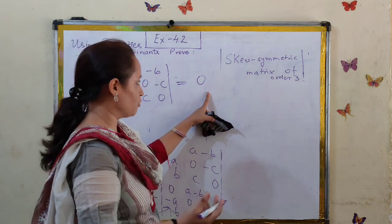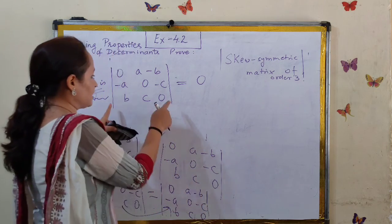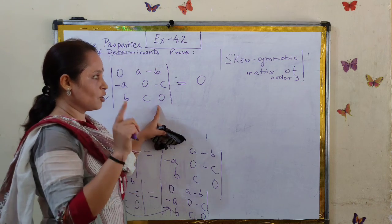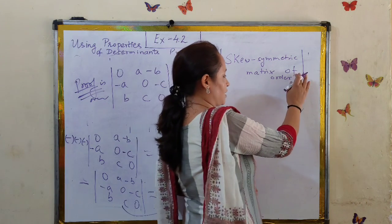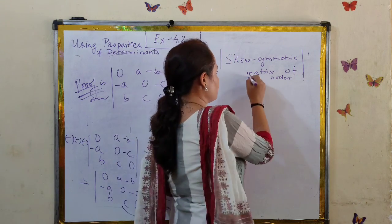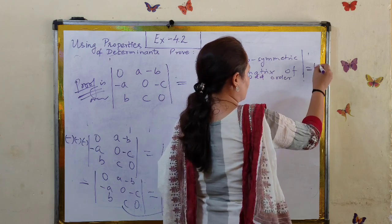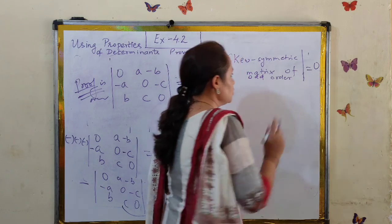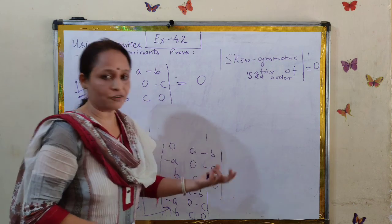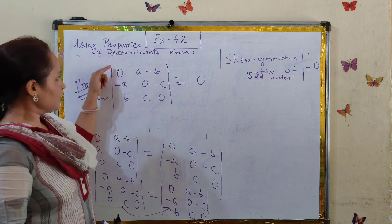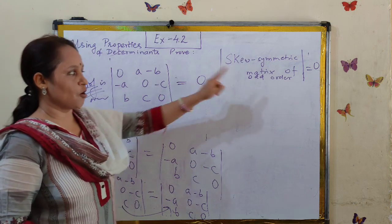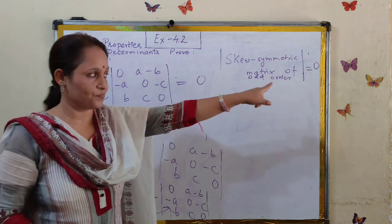From this we get an important conclusion. The determinant of a skew-symmetric matrix of order 3 — which is an odd order — is always equal to zero. We can note that down. This is a very important fact concluded from this question: the determinant of a skew-symmetric matrix of odd order is always zero.